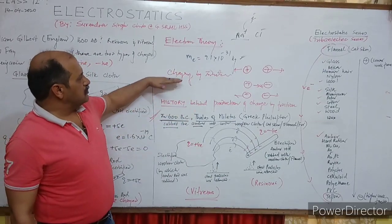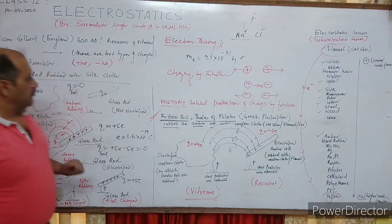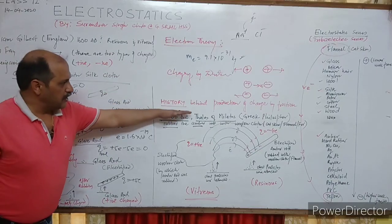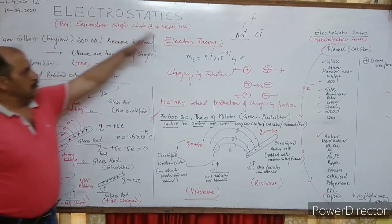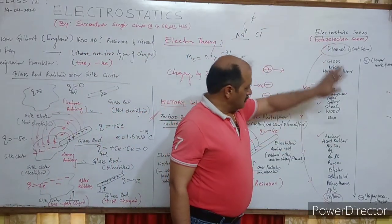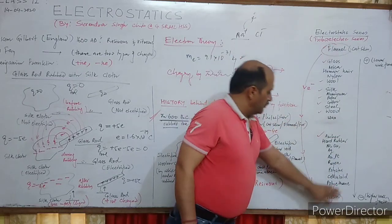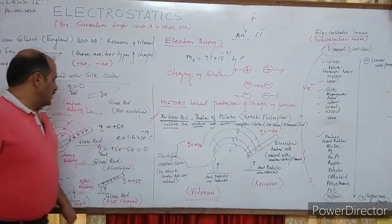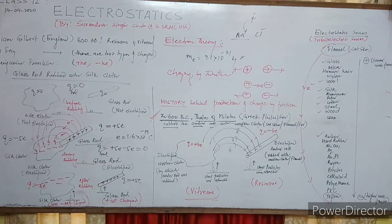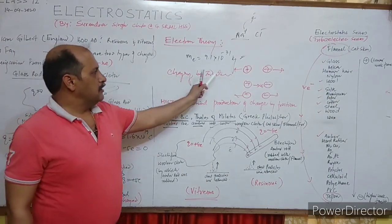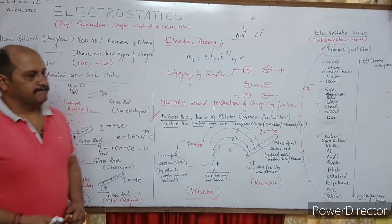Today's lecture covered: the history behind the production of charges and electron theory; the electrostatic and triboelectric series; higher and lower work function elements; transfer of electrons and mass; symbol of charge Q; and conservation of charge. In the next chapter I will cover charging by induction. Thank you, students.